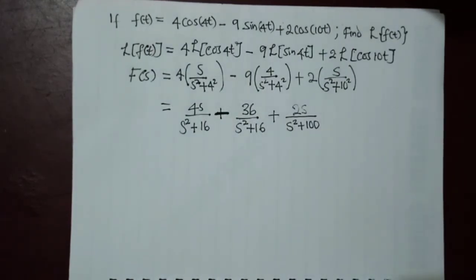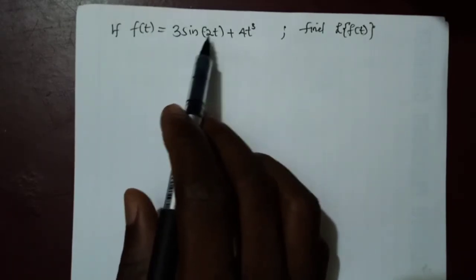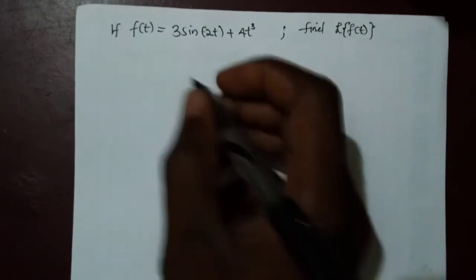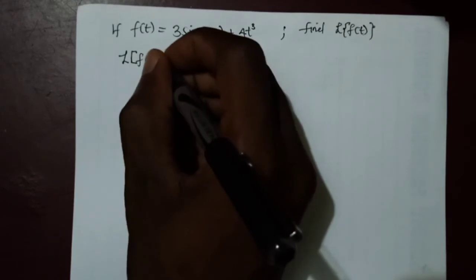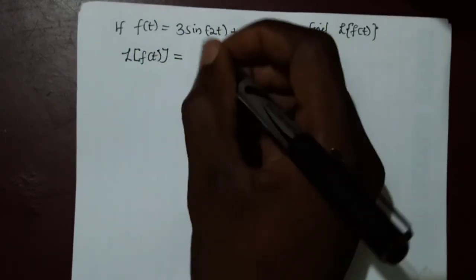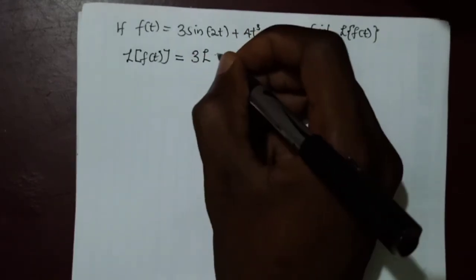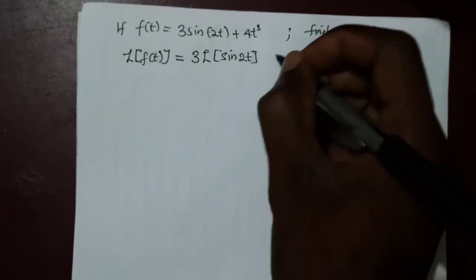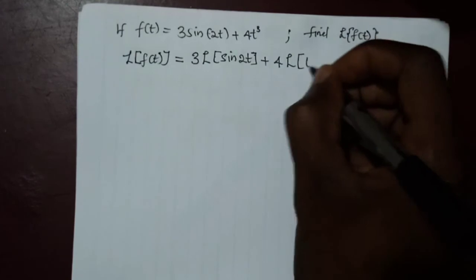Now let us look at the last problem for today: f(t) = 3sin(2t) + 4t³. We are asked to find the Laplace transform. We take L{f(t)}, which equals 3 times L{sin(2t)} plus 4 times L{t³}.